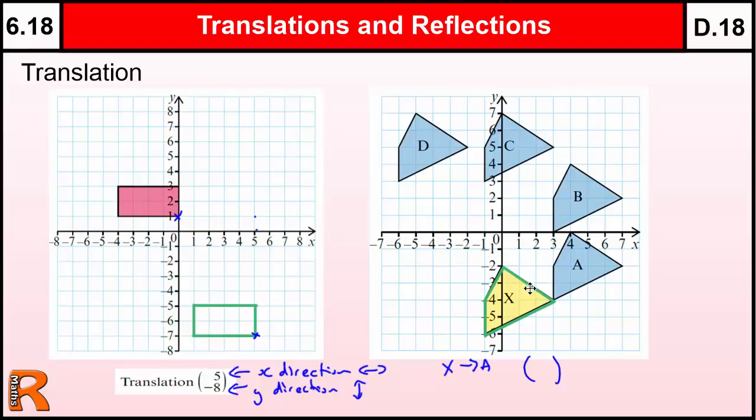So we are moving, we always go across first, 1, 2, 3, 4 to the right, to get it in the right position horizontally, and then 1, 2 vertically. So we moved it 4 to the right, and 2 up, so we put 4, 2.